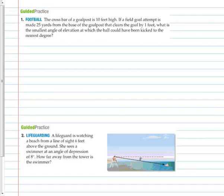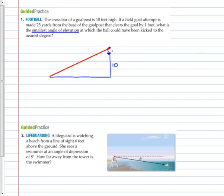Let's look at another situation; we will draw the picture on this one. The crossbar of a goal post is 10 feet high. If a field goal attempt is made 25 yards from the base of the goal post and clears the goal by one foot, what is the smallest angle of elevation at which the ball could have been kicked? The ball cleared it by one foot — so the height is 11 feet. The distance is 25 yards; we need to change that to feet by multiplying by 3, getting 75 feet. Make sure you are in the same unit of measure when you do this, otherwise your answer won't come out correctly.